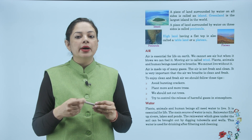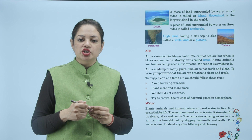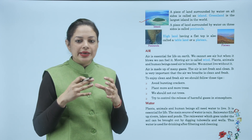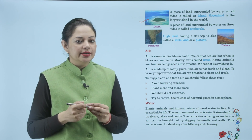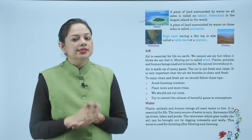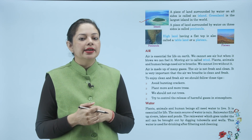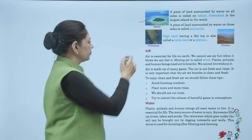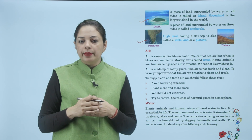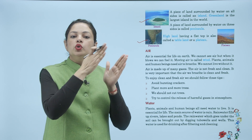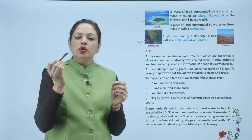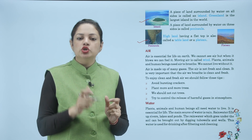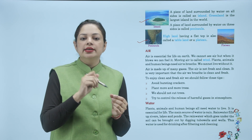A piece of land surrounded by water on all sides is called an island. Greenland is the largest island in the world. A piece of land surrounded by water on three sides is called a peninsula. जैसे India का south side एक peninsula है क्योंकि वो West, South और East तीनों sides से पानी से surrounded है। जो चारों तरफ से पानी से घिरा हो वो island, और जो तीन sides से घिरा हो वो peninsula।